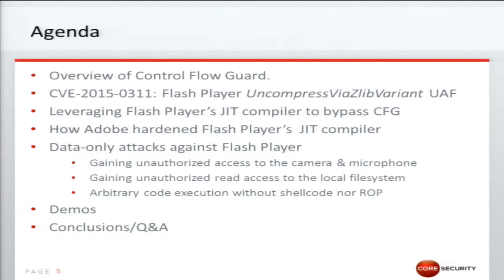This is the agenda for this talk. We'll start with a little overview of Control Flow Guard, then a quick overview of CVE 2015-0311, which was a use-after-free vulnerability affecting Flash Player and was the starting point for this research. Then we'll see how to leverage the just-in-time compiler of Flash to bypass the CFG mitigation, and also how Adobe has hardened the JIT compiler. The second part covers three data-only attacks: gaining unauthorized camera and microphone access, gaining unauthorized access to the local file system, and executing arbitrary code without shellcode or ROP — with live demos of all three.